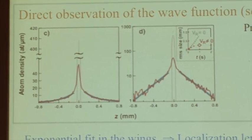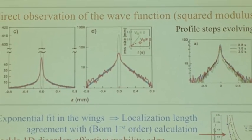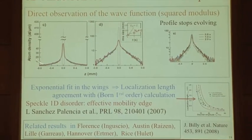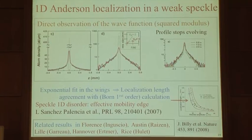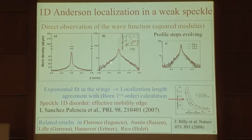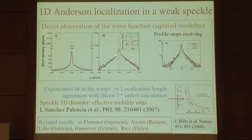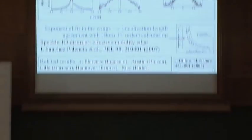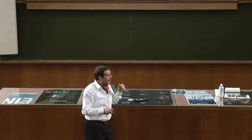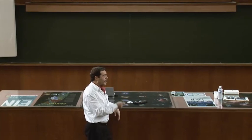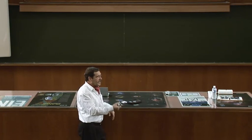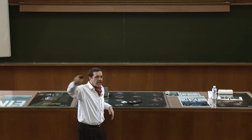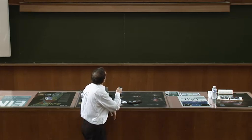Il faut être sérieux : on fait des mesures, on vérifie que c'est bien une exponentielle. La méthode des jeunes : des fits à l'ordinateur. Moi, je suis un vieux, je leur dis : tracez-moi sur un diagramme semi-log. Là, je suis convaincu. On peut mesurer en mesurant la pente la constante de l'exponentielle, c'est-à-dire la longueur de localisation. À 1D, on peut utiliser un développement de Born à l'ordre le plus bas, et on voit que ça correspond parfaitement au calcul ab initio. Je connais l'énergie cinétique de mes atomes, je connais tout sur mon speckle car gaussien — je peux faire un calcul ab initio et je vois que ça marche bien.